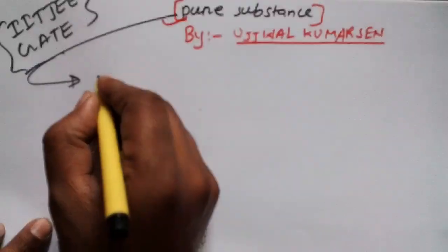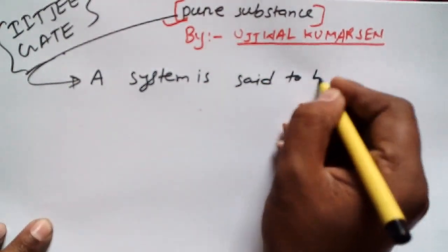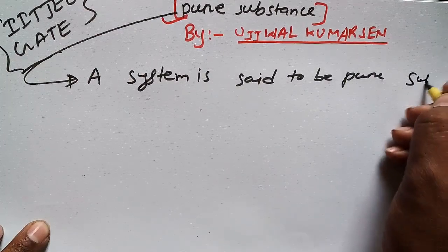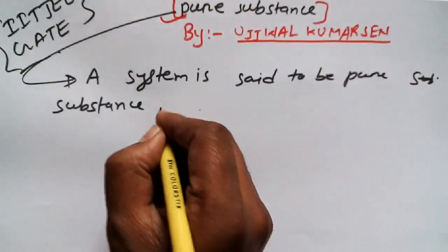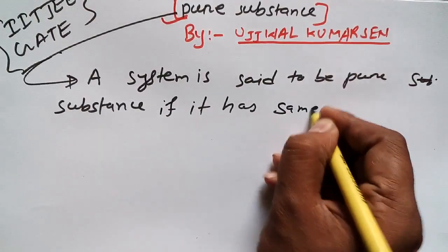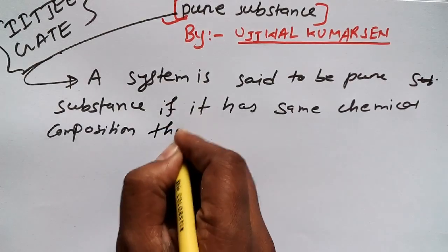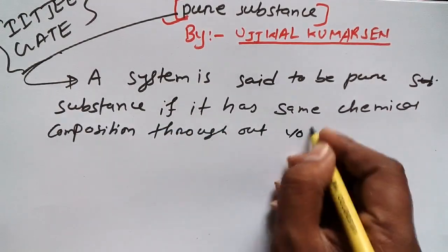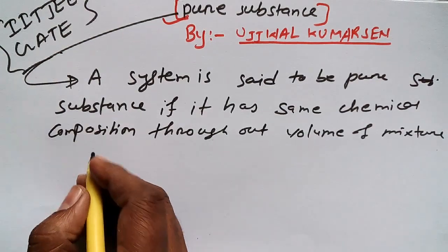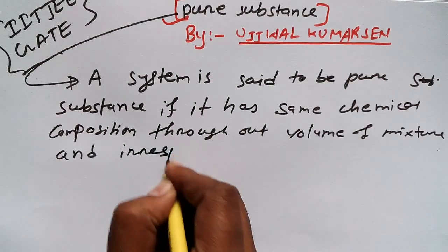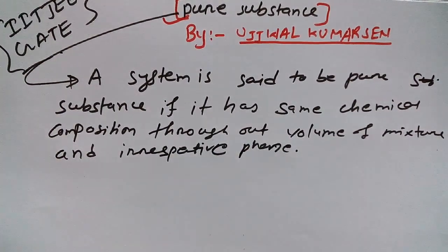By definition, a system is said to be a pure substance if it has the same chemical composition throughout the volume of the mixture, and irrespective of phase. That means there will be the same chemical composition throughout — that is known as a pure substance.